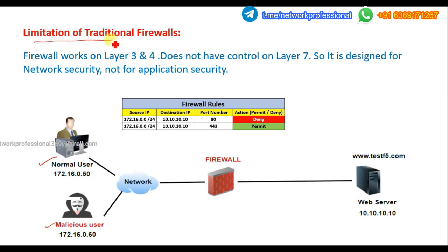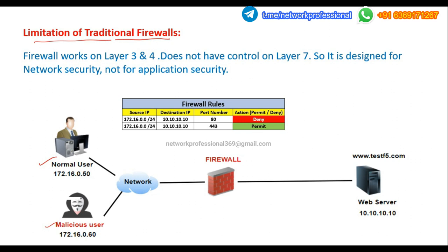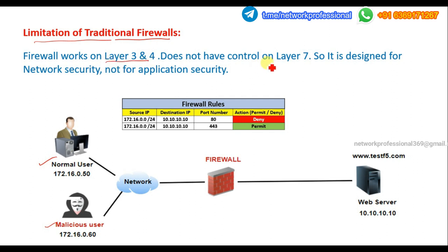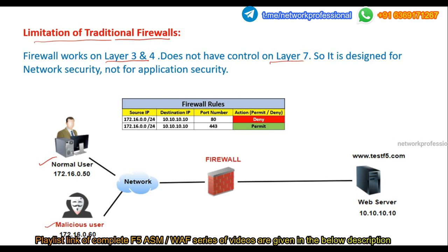Let's understand the limitations of the traditional firewall. As we saw, the firewall works only on layer 3 and layer 4 — it has no control on layer 7. Because it has no control on layer 7, it cannot prevent application-level attacks or provide application security. That is why we say it is designed for network security — it works only on layer 3 and layer 4.